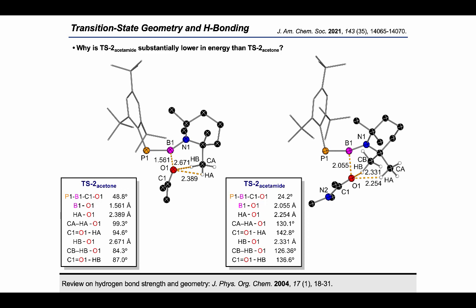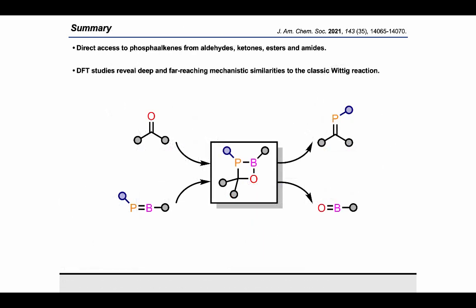In summary, the phospha-Bora-Wittig reaction exploits the unique reactivity of transient phosphaboranes to provide direct access to known and novel phosphoralkenes directly from a range of carbonyl compounds including aldehydes, ketones, esters, and amides. DFT studies provided insights into the contrasting reactivity between the different classes of carbonyl compound and furthermore revealed deep and far-reaching mechanistic similarities to the classic Wittig reaction.